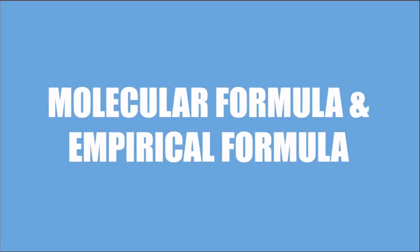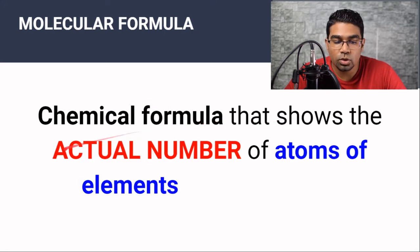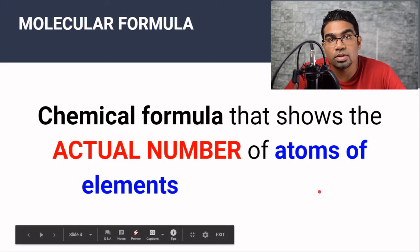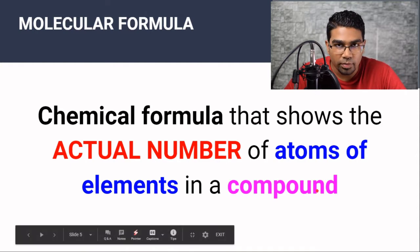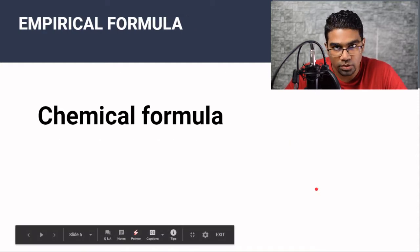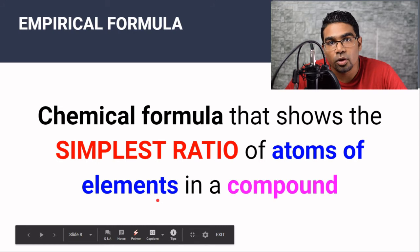Before we get into the question, let's look at what molecular formula and empirical formula mean. Molecular formula is a chemical formula that shows the actual number of atoms of elements in a compound. Empirical formula is also a chemical formula, but it only shows the simplest ratio of atoms of elements in a compound.